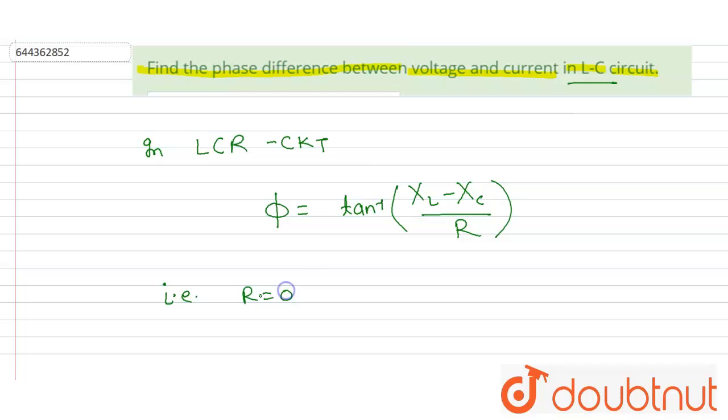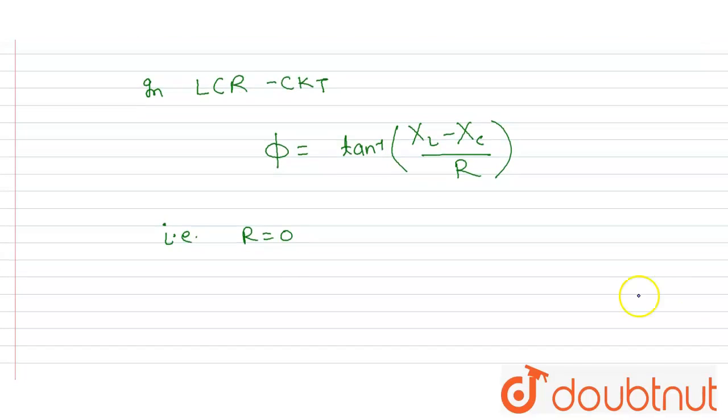R equal to 0. So the phase difference phi will become phi equal to tan inverse of (X_L minus X_C) divided